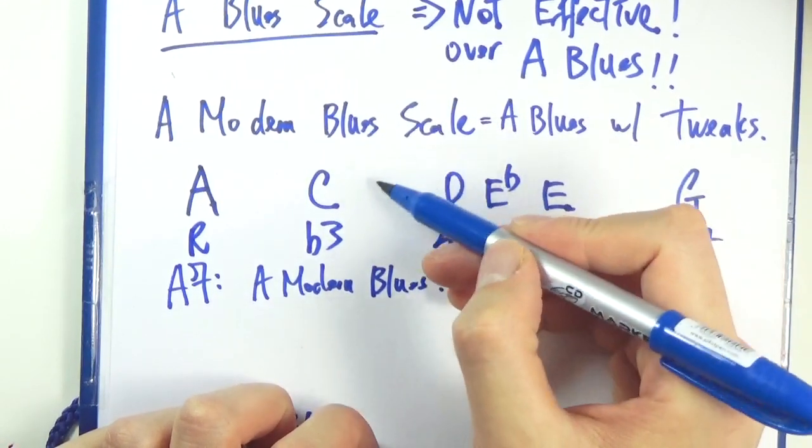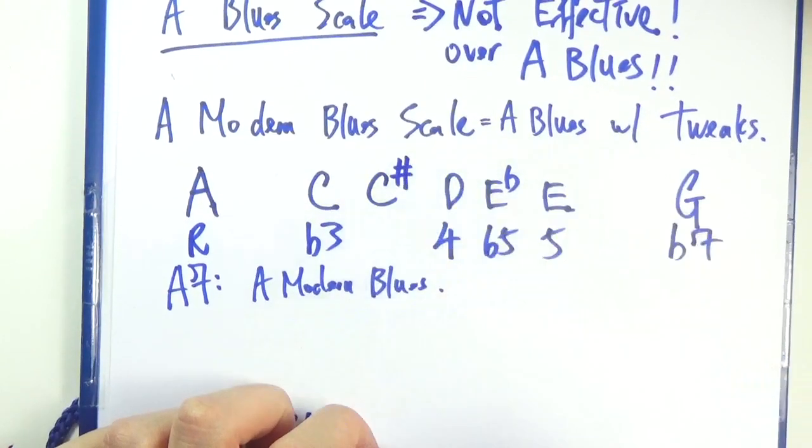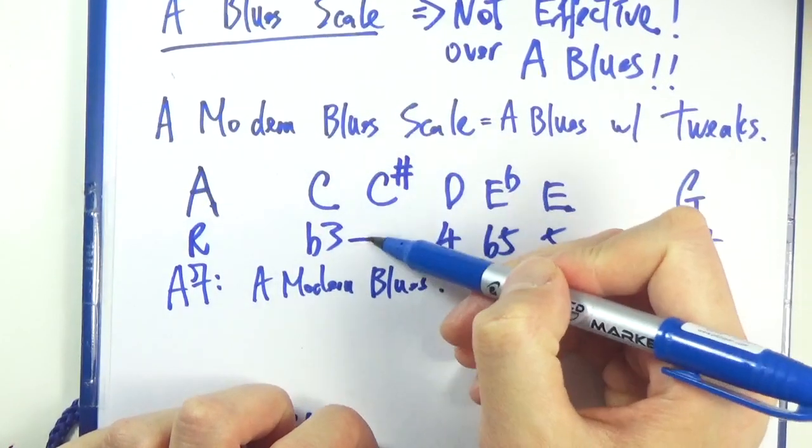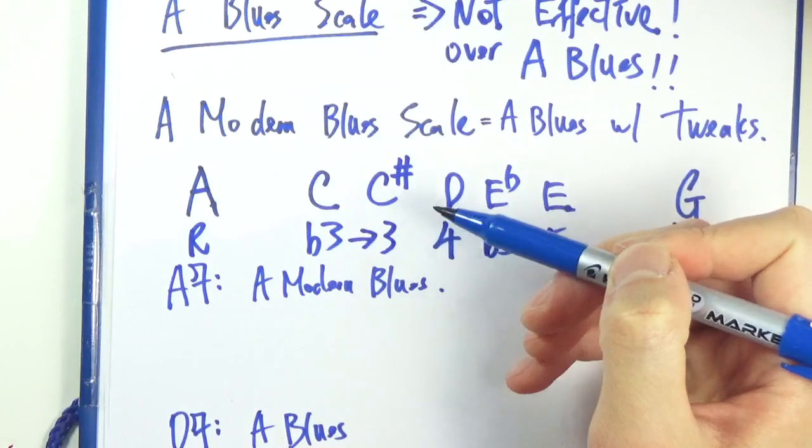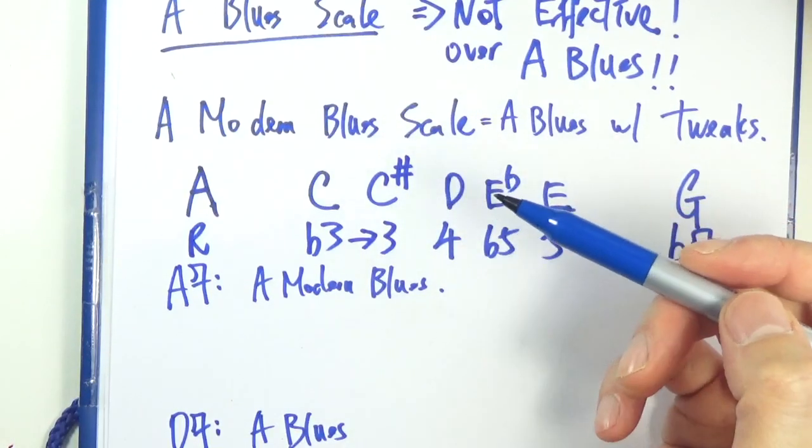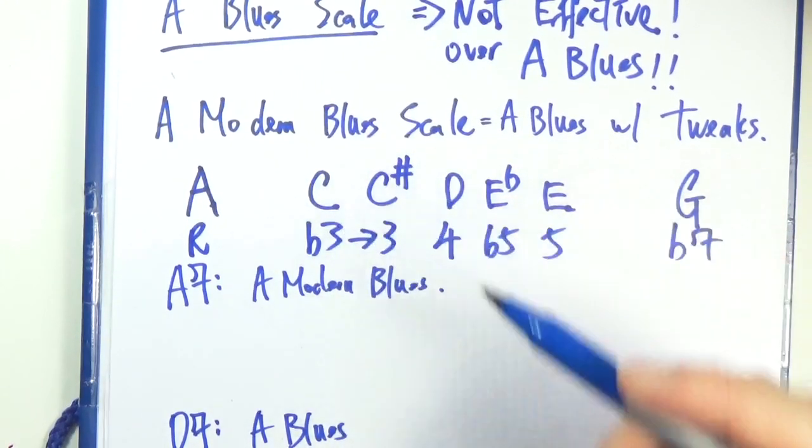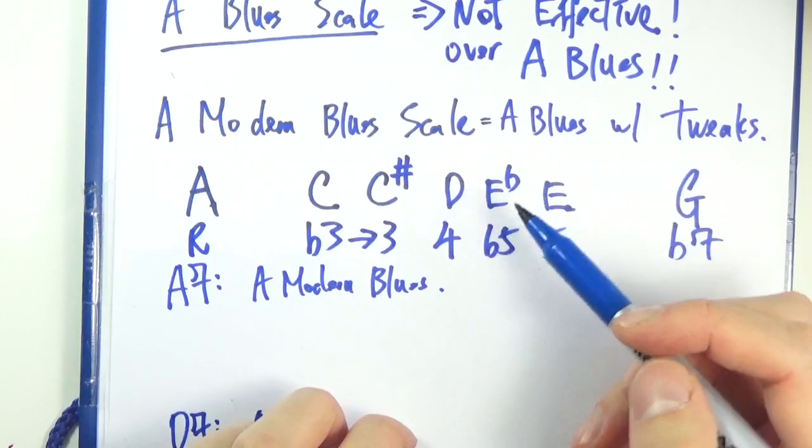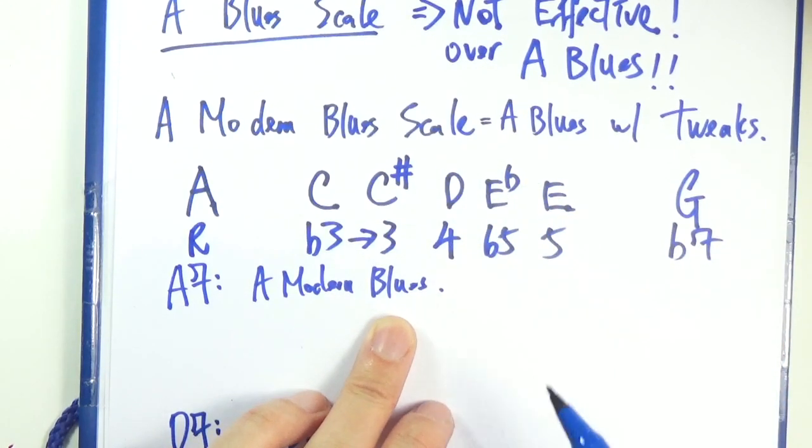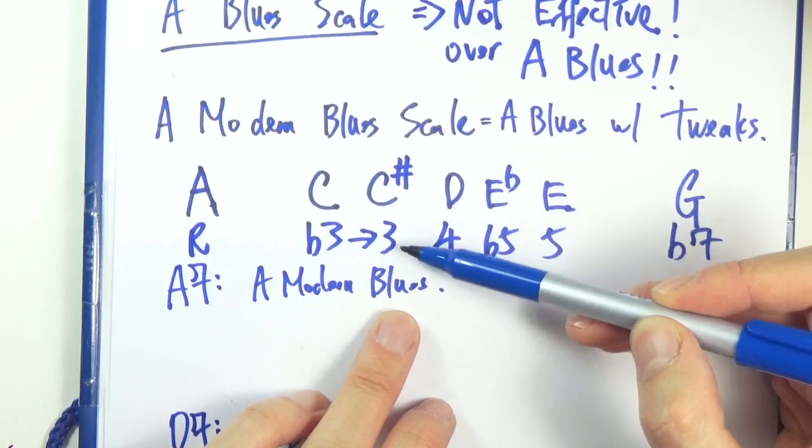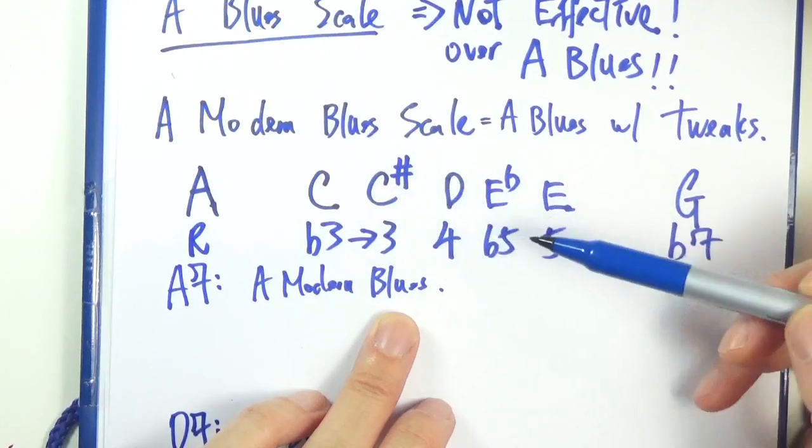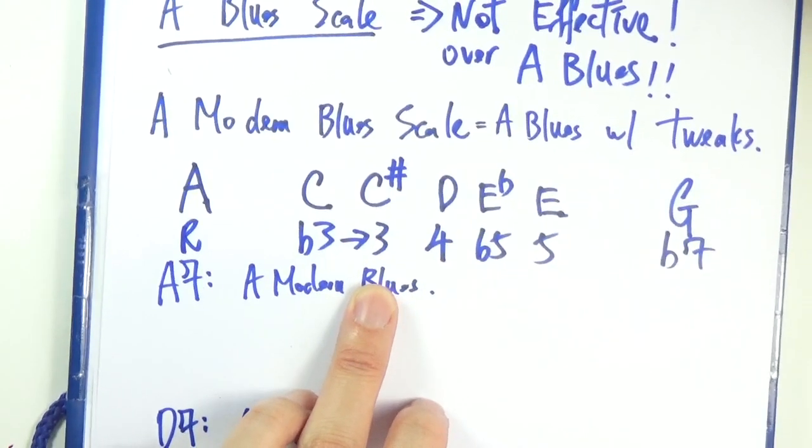So C here. We are going to add C sharp. Okay. So this is the flat 3 to 3 move and it will be discussed in details in the note choice videos over at 1 7 chord. And we will definitely cover a little bit of this in this video too. For now just learn that we are going to add C sharp, the major third to the scale. So that's the new addition.